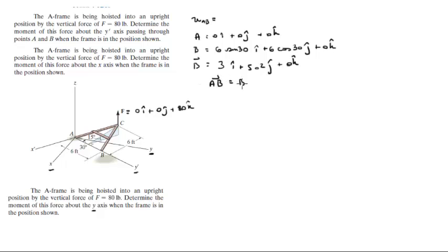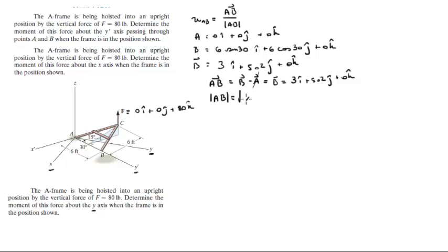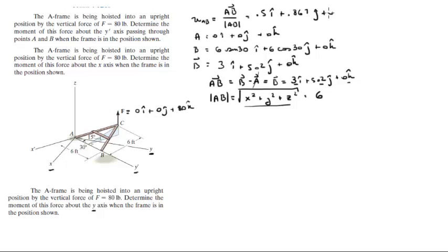So AB is B minus A, but A is the origin, so it equals B: 3i plus 5.2j plus 0k. To find the unit vector AB, we divide AB by its magnitude. The magnitude is found by taking the square root of the sum of squared components, which comes out to exactly 6. Dividing by 6 gives the unit vector AB: 0.5i plus 0.867j plus 0k.